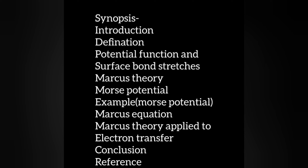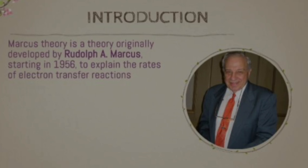Introduction: Marcus Theory is a theory originally developed by Rudolph A. Marcus starting in 1956 to explain the rates of electron transfer reactions. This theory explains the rate or speed of electron transfer reactions — that is, reactions in which electrons are transferred. Marcus Theory is used to determine the rate at which this electron transfer occurs.